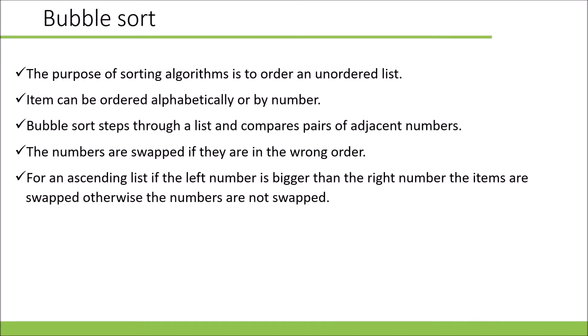For an ascending list, if the left number is bigger than the right number, the items are swapped. Otherwise, they're not swapped. For a descending list, the opposite is the case.